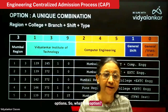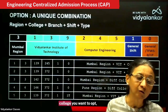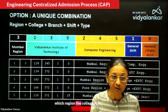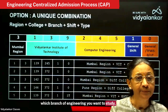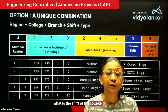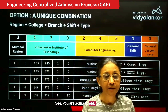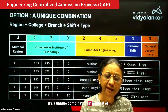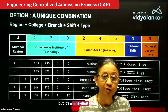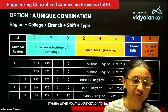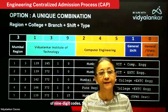So what is this option? It's a unique combination of the engineering college you want to opt, which region the college is in, which branch of engineering you want to study, what is the shift of the college, and which type of engineering seat you are going to opt. So it's a unique combination in general of the college and the branch, but it's a nine digit code. When you fill your option form, what you will see on the screen is a series of nine digit codes.